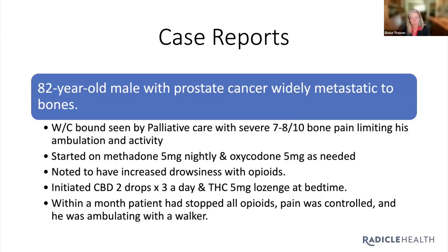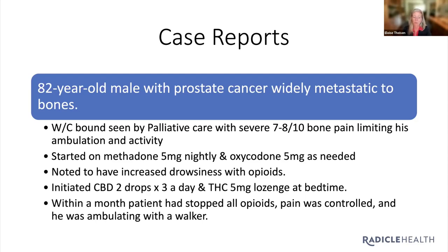Case 2: An 82-year-old male with prostate cancer widely metastatic to the bone — which can be extremely painful. He came to palliative care in a wheelchair with severe pain rated 7 to 8 out of 10, limiting his ability to walk and participate in activities. He was started on methadone 5 mg nightly and oxycodone 5 mg as needed, but noted increased drowsiness with opioids. He was asked if he'd try cannabis: initiated two drops of CBD three times a day and a 5 mg THC lozenge at bedtime. Within a month, he had stopped all opioids, pain was controlled, and he was able to ambulate with a walker.